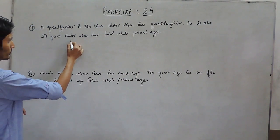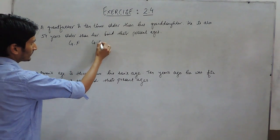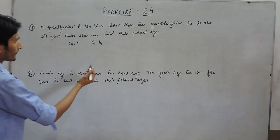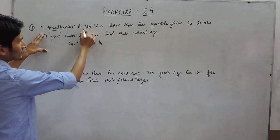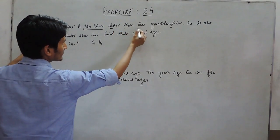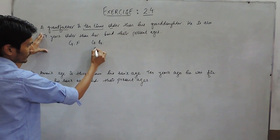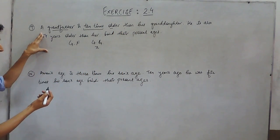In this question there are two people. One is grandfather and another is granddaughter. In the first statement it is given that grandfather is 10 times older than his granddaughter. Means if the age of granddaughter is x years,